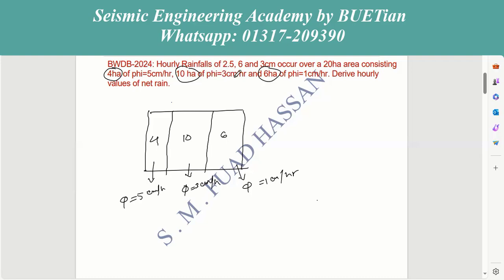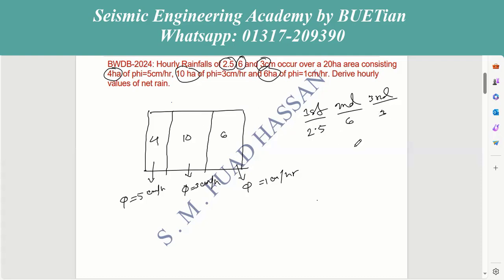The hourly rainfall means that the first hour is 2.5 cm, the second hour is 6 cm, and the third hour is 3 cm. So we have three hours of rainfall with these respective values: 2.5 cm, 6 cm, and 3 cm.